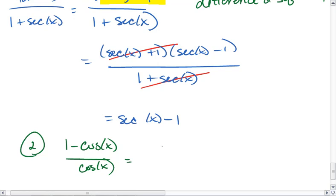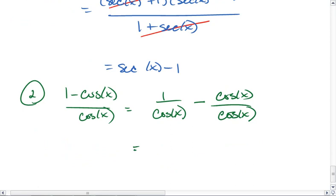What we can do is we can break this fraction into two different fractions. So we can break it up, giving us 1 over cosine x minus cosine x over cosine x, which reduces down to 1 over cosine x minus 1, so our cosines cancel.